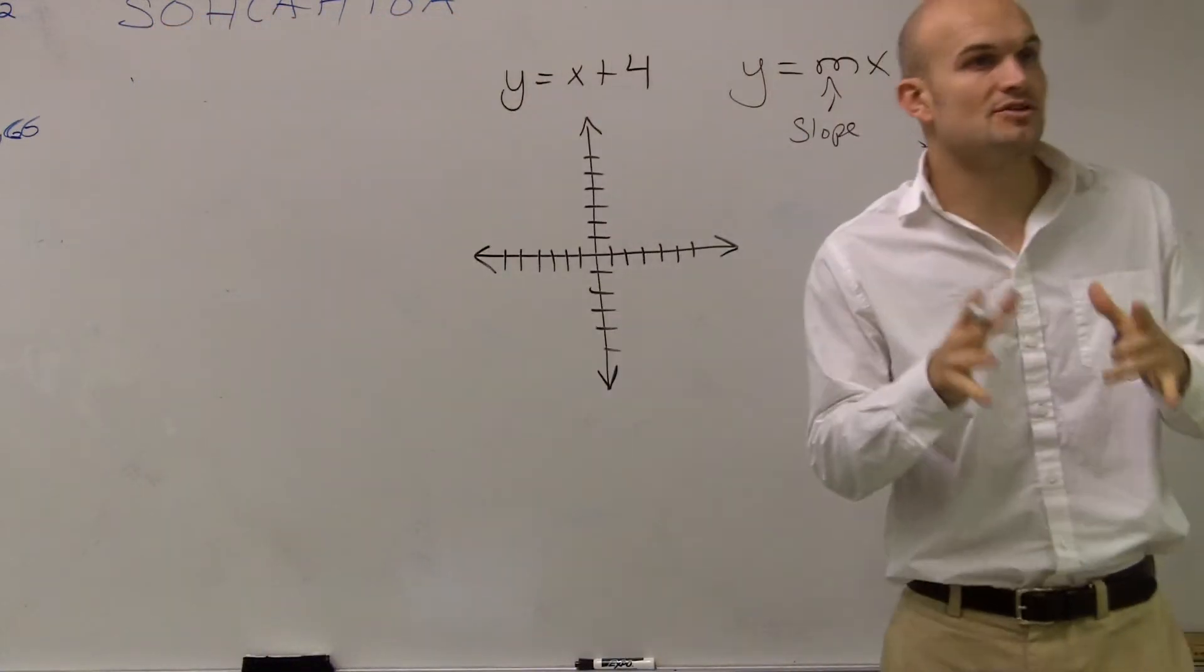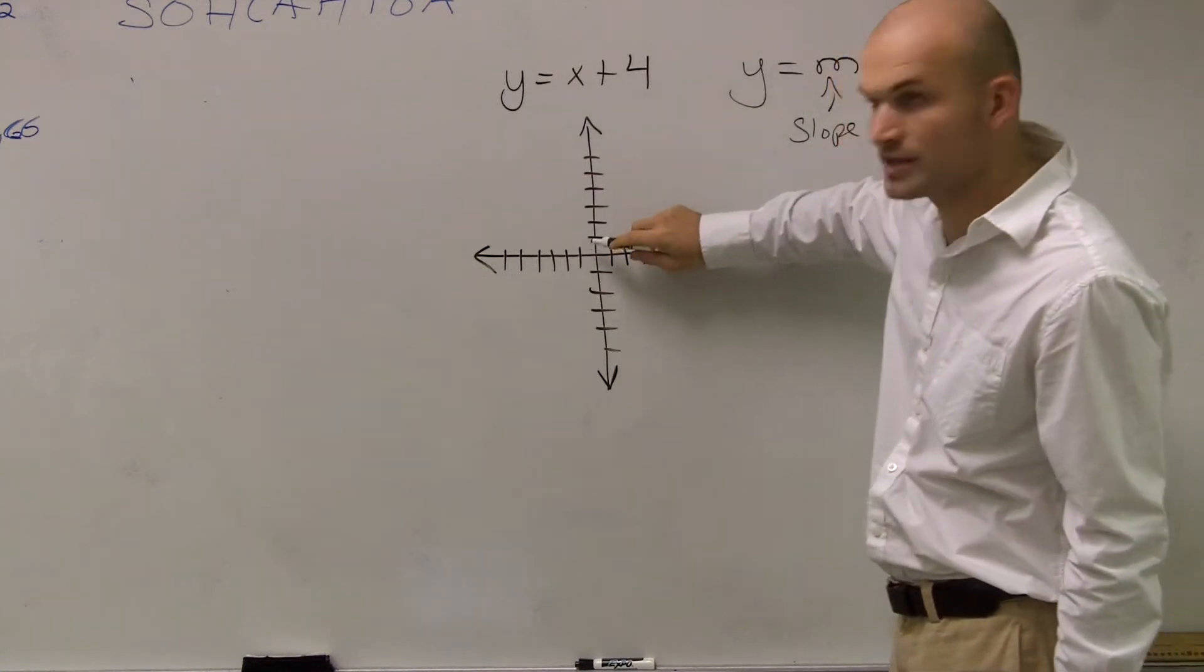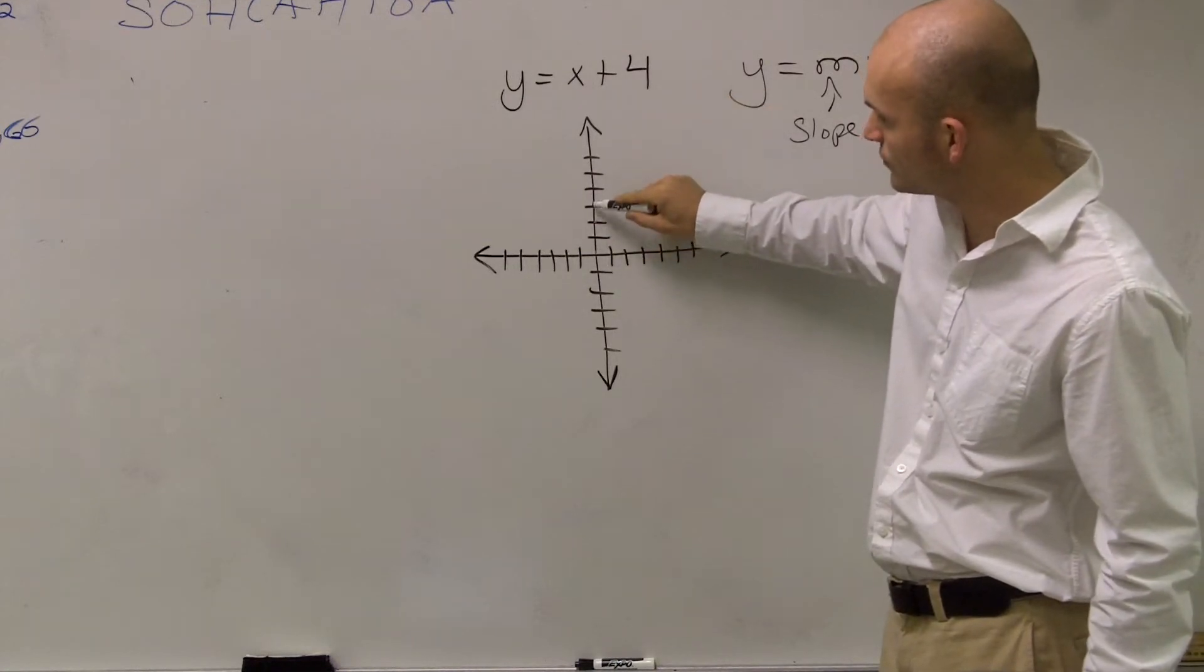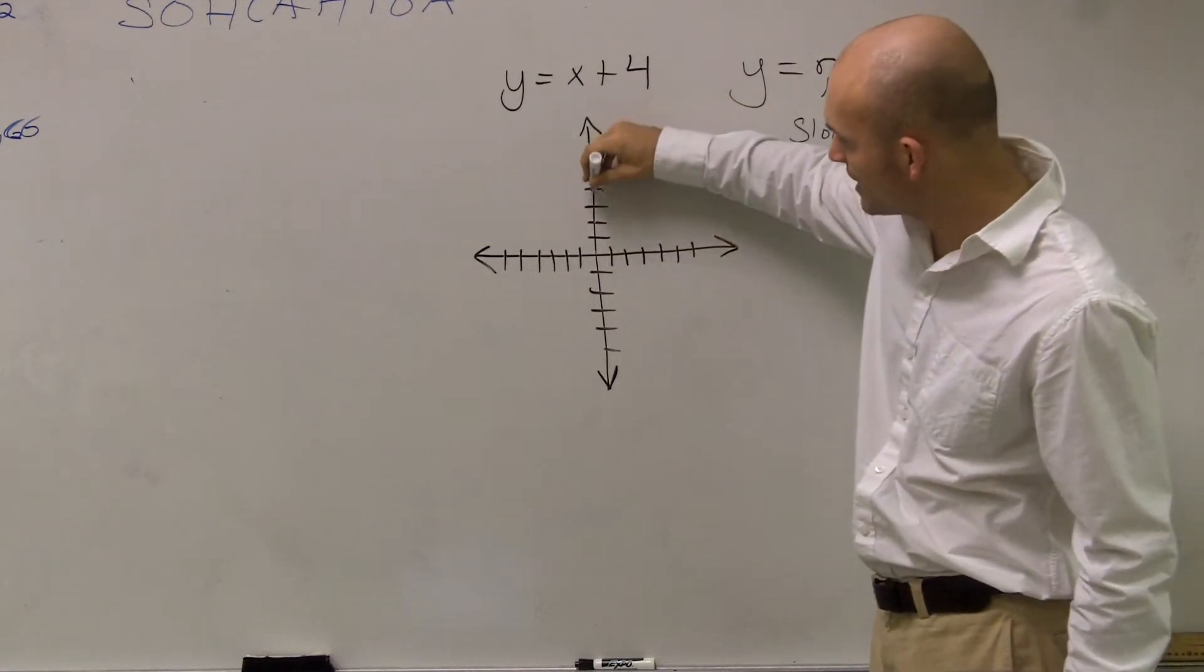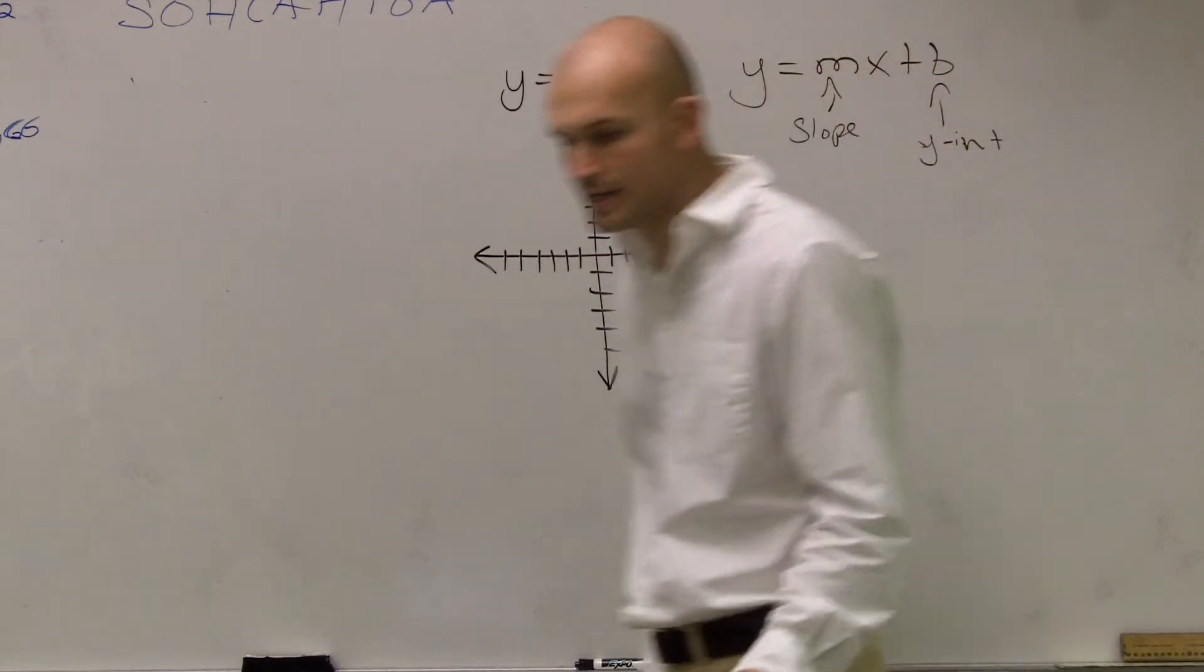Remember, the y-intercept is where a graph crosses your y-axis, so I go up to where the y-axis is, where the y-intercept is at 4, so therefore I'm going to go up 1, 2, 3, 4, and since I know that's where my line crosses, I'm going to make a dot at that point.